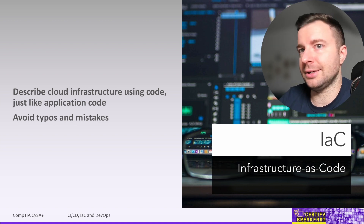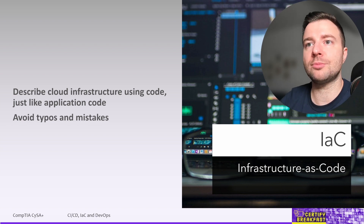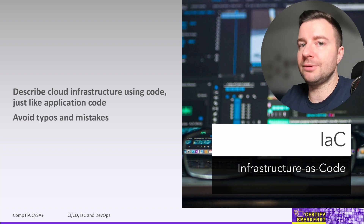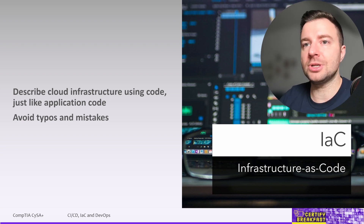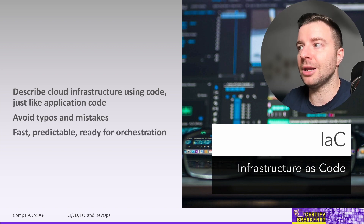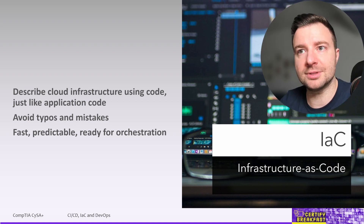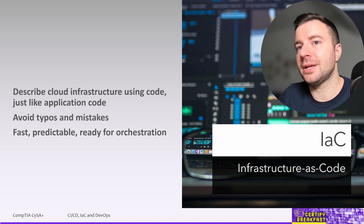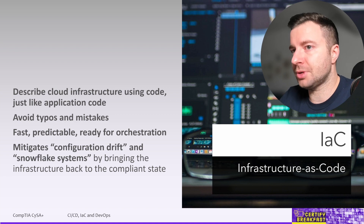So if we're treating our infrastructure code just like we did with application code before, we get access to things like code versioning. We get the chance to roll back to a previous configuration where the previous version of the infrastructure was working properly. We can have code reviews that validate the infrastructure we're about to deploy, unit tests, and we can commit to a versioning system and keep track of multiple versions. Having everything in code also provides a lot of speed, enables advanced orchestration tools, makes deployments extremely predictable, and encourages standardization. IaC also fights against configuration drift or lack of consistency.